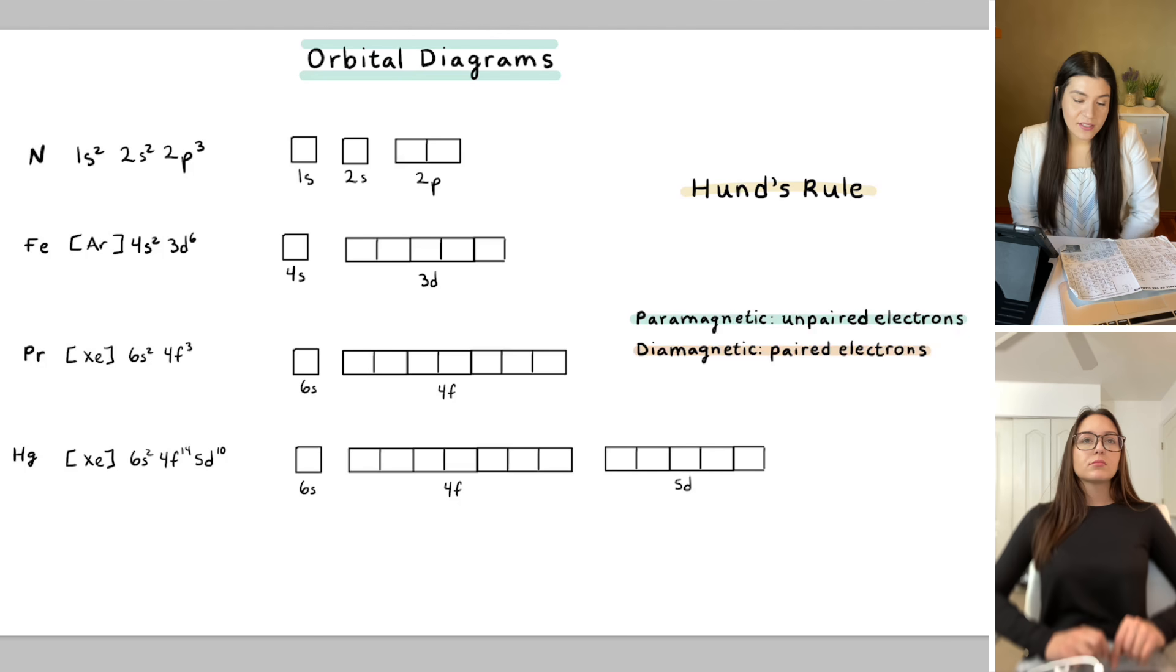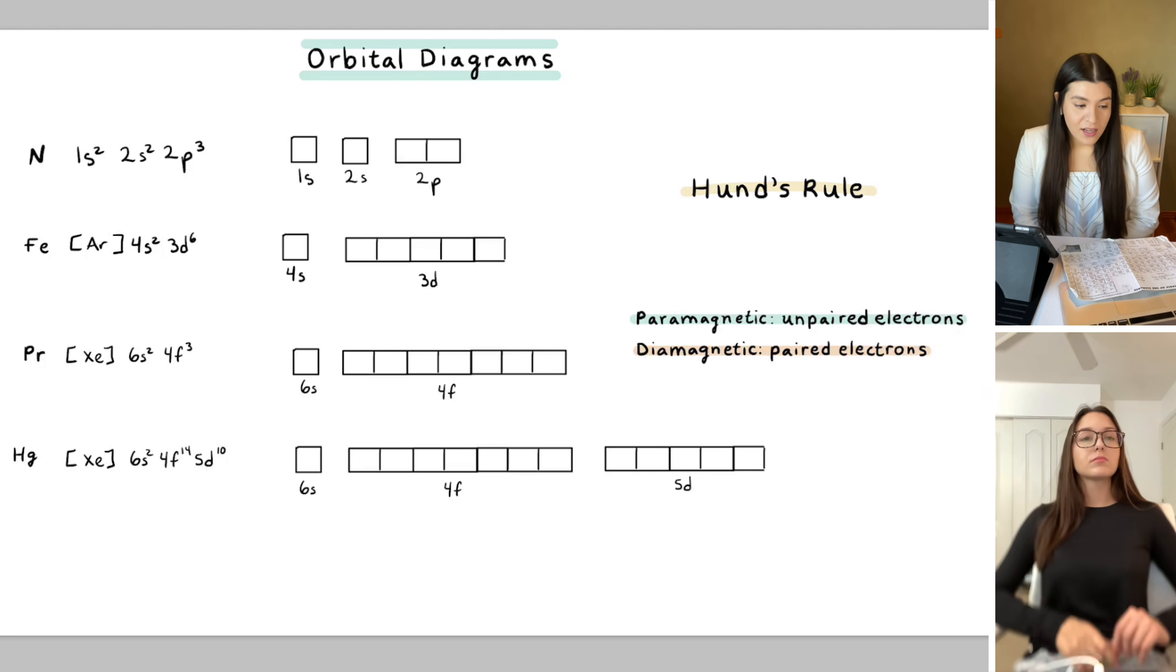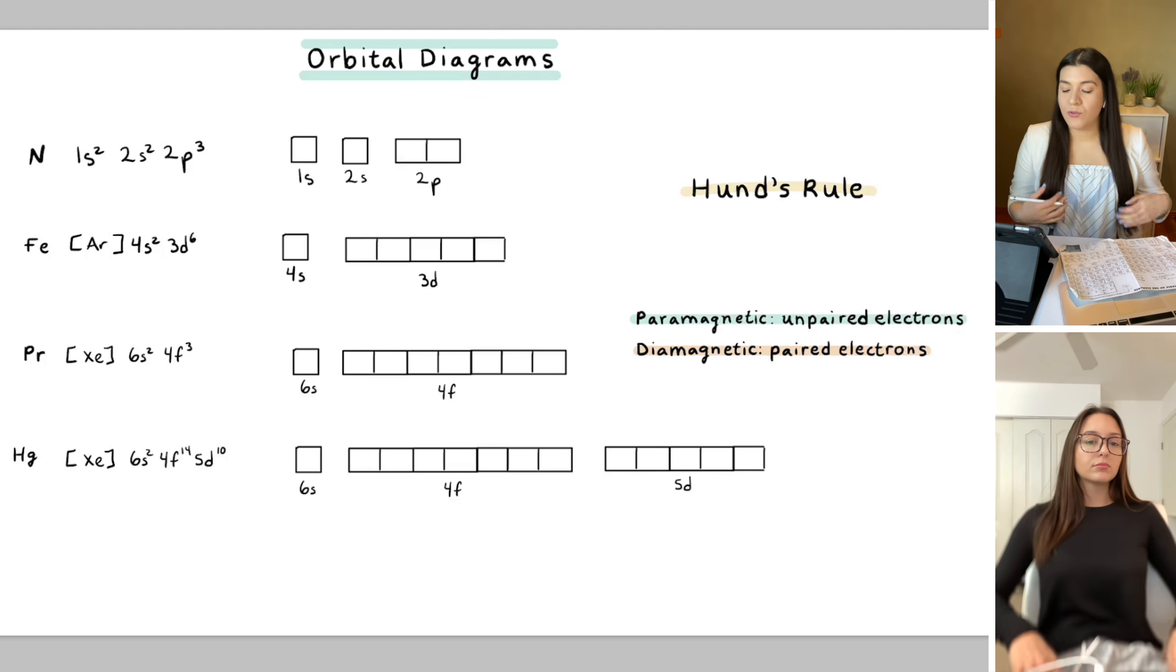This is basically just telling us where the electrons are going to be, and it's also just a way to represent how to draw the electrons and understanding a rule called Hund's Rule.